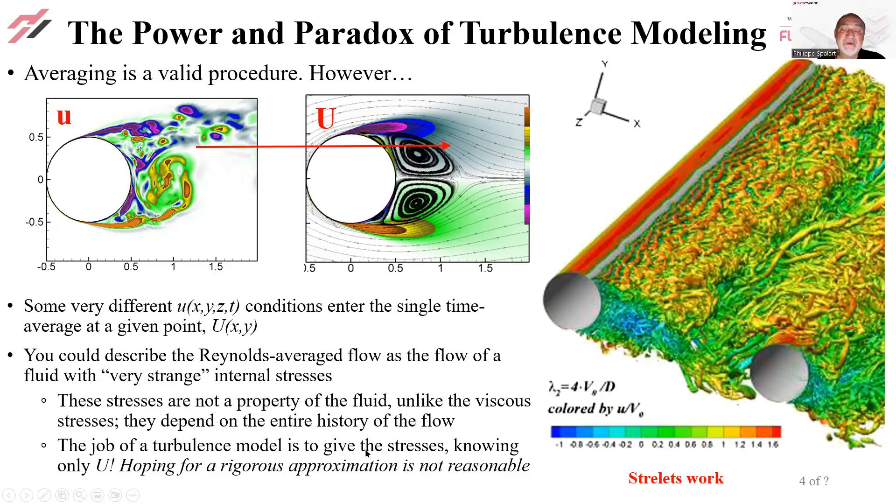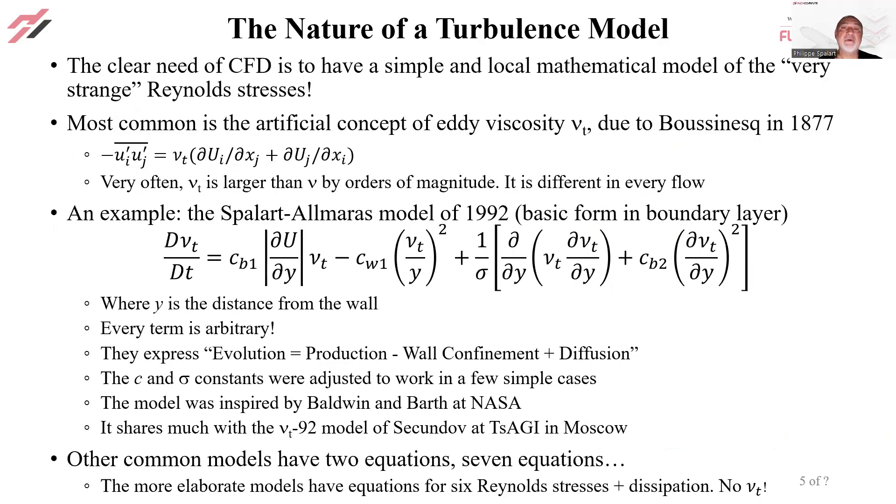So the job of a turbulence model is to give these stresses, which are hidden inside time averaging and third direction and all that, knowing only capital U. So hoping for rigorous approximation is not reasonable. This is why for 100 years, since the days of Prandtl, turbulence modeling has been empirical and will never be perfect.